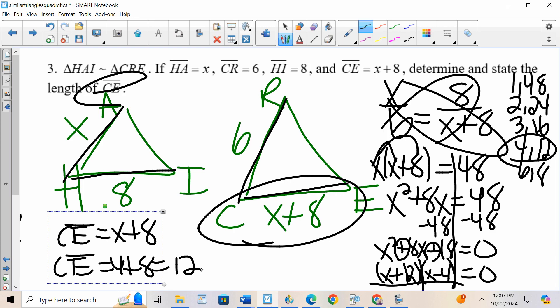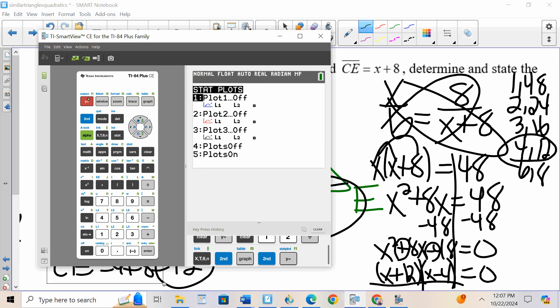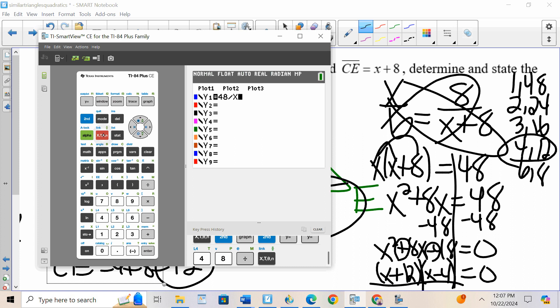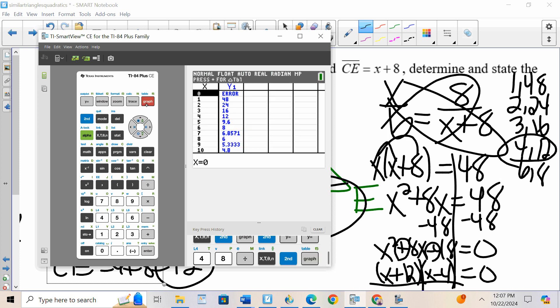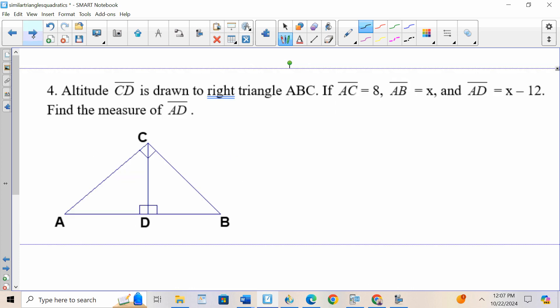And one more time, if you want to do the calculator trick, in this case you want the numbers that multiply to 48, so you go to Y equals, you do 48 divided by X, and then you go second graph for your table, and that will give you all your values. All right, one more that has a little twist.